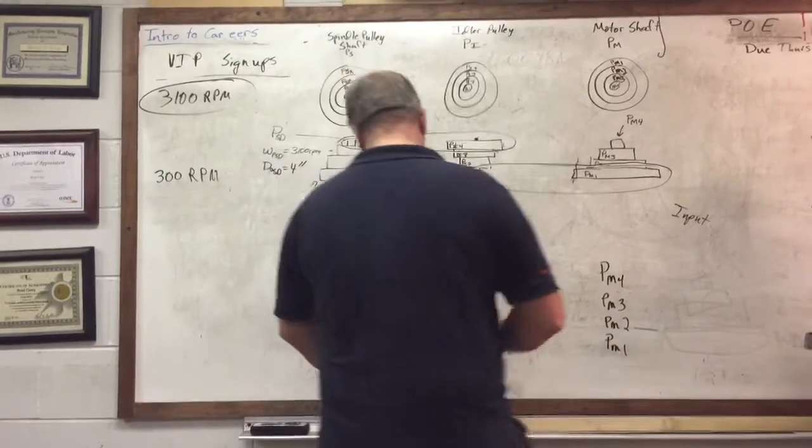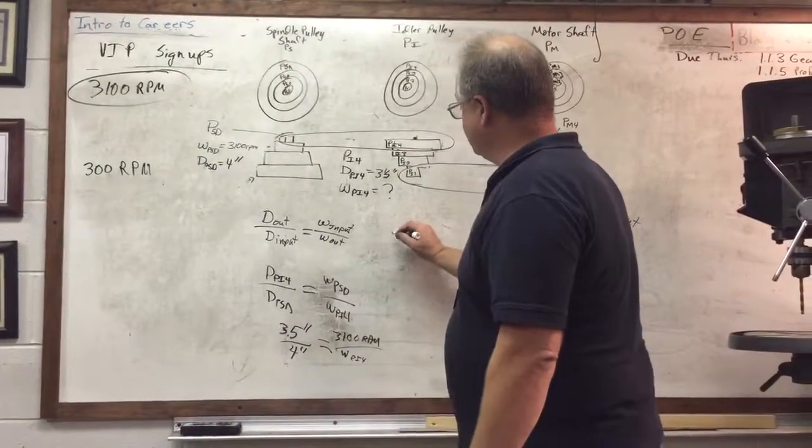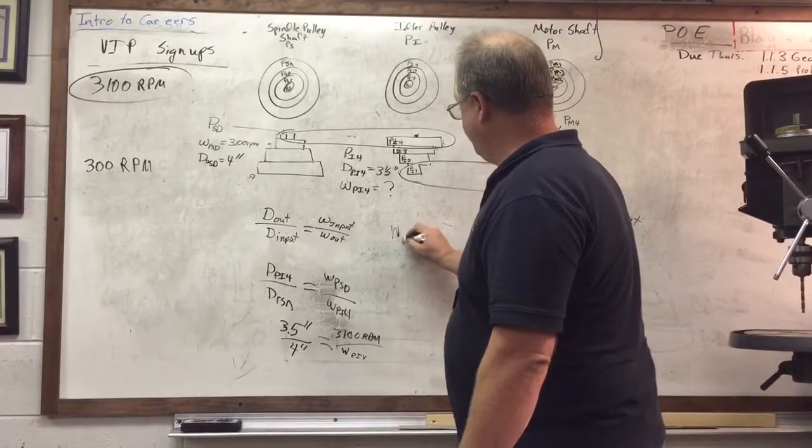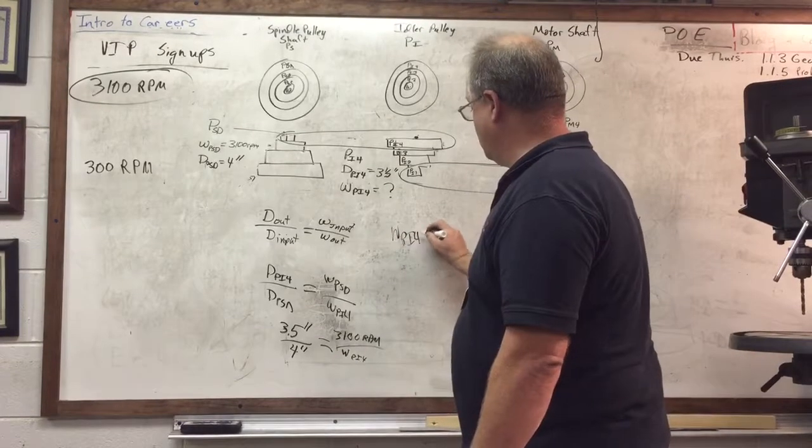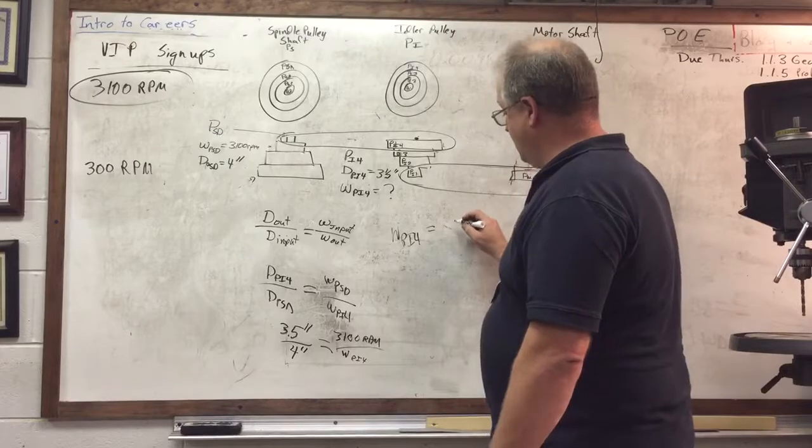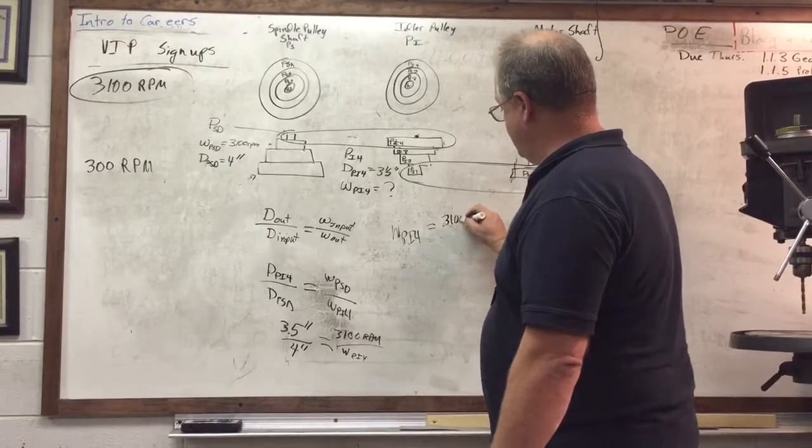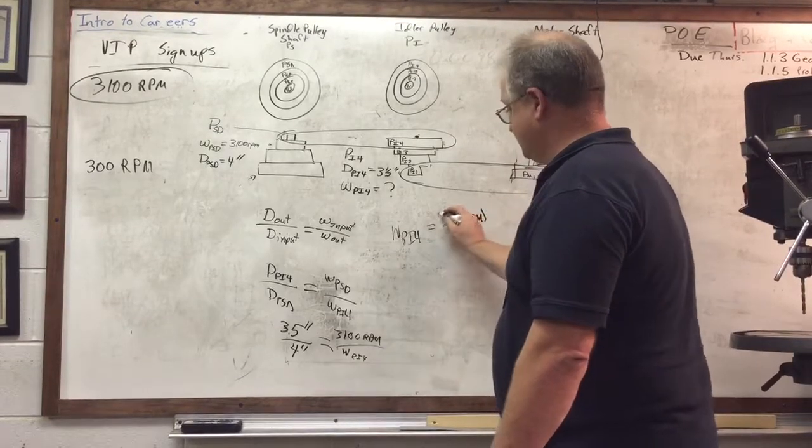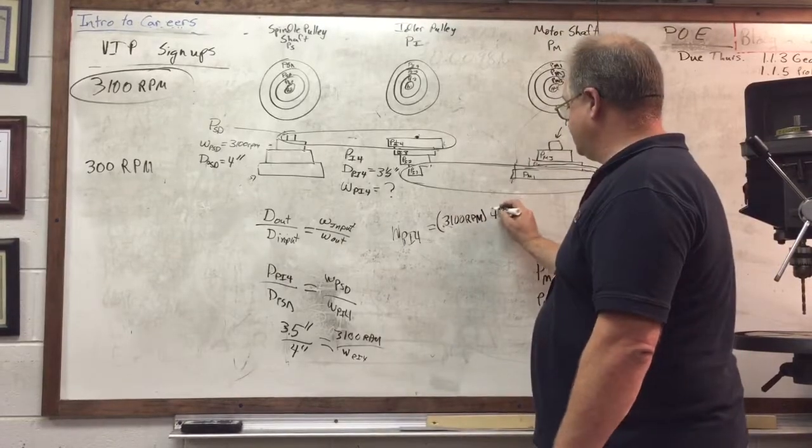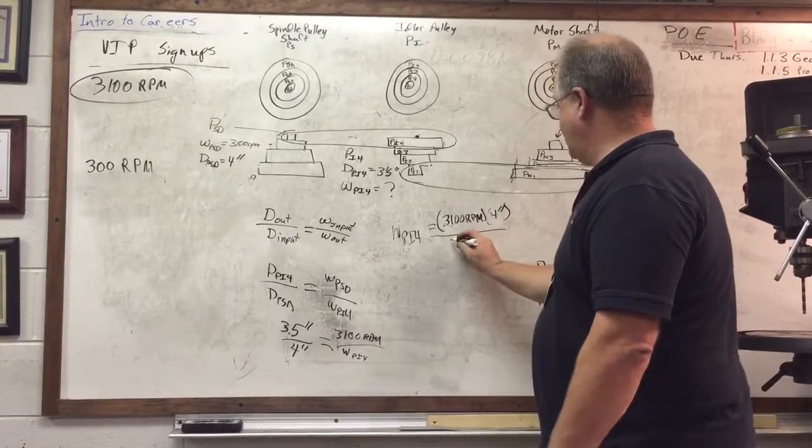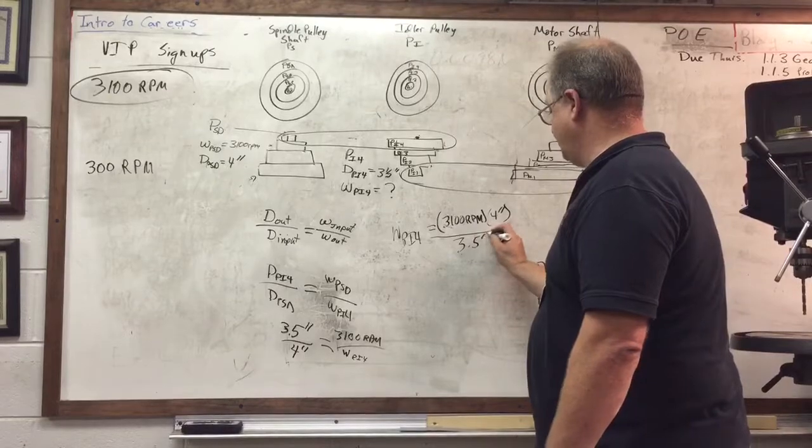So I'm going to come over here, move this up. So wpi4 equals 3100 rpm times 4 inches divided by 3.5 inches.